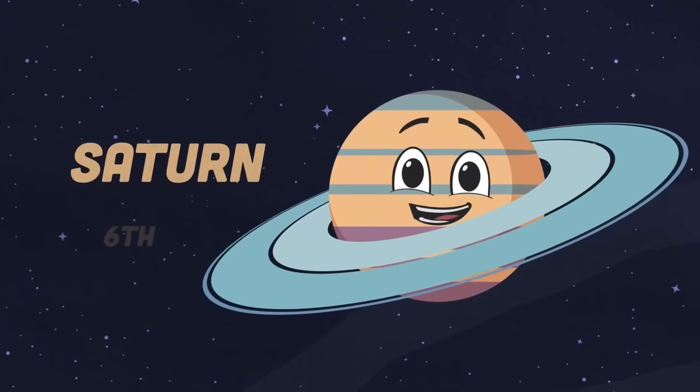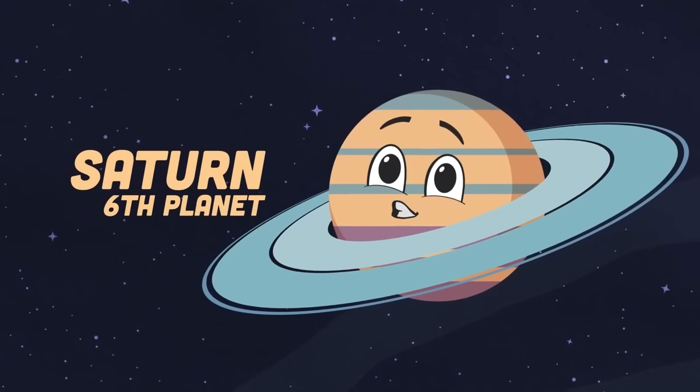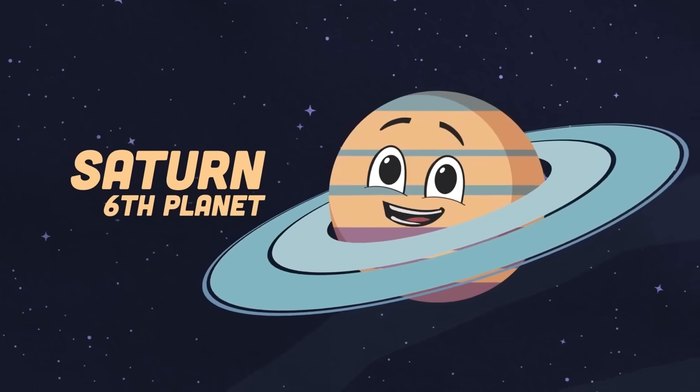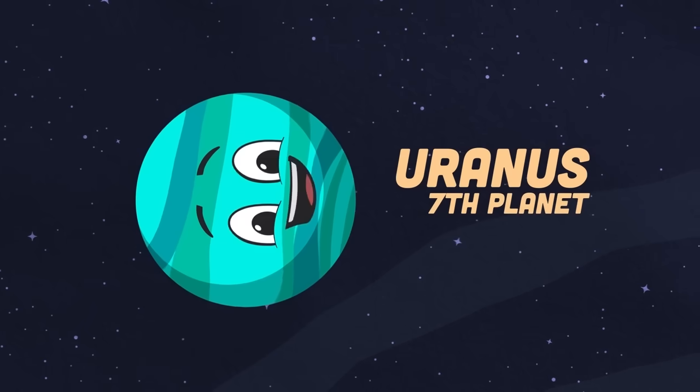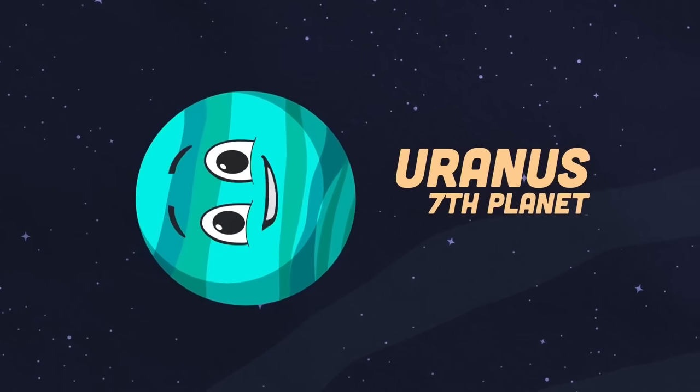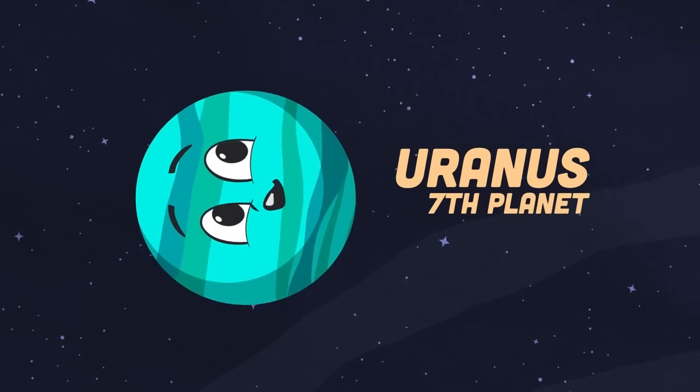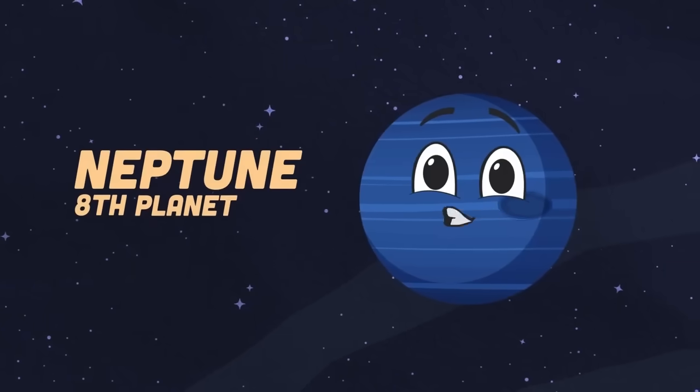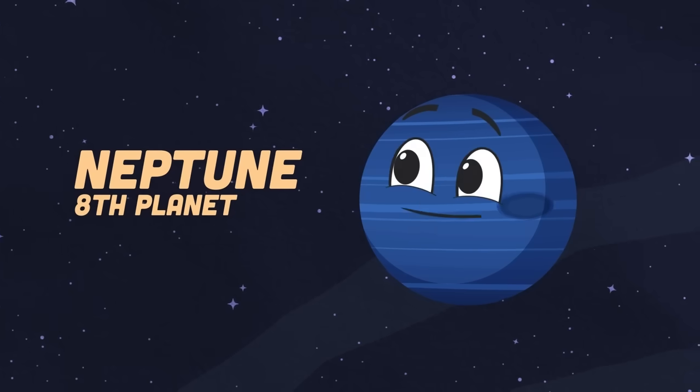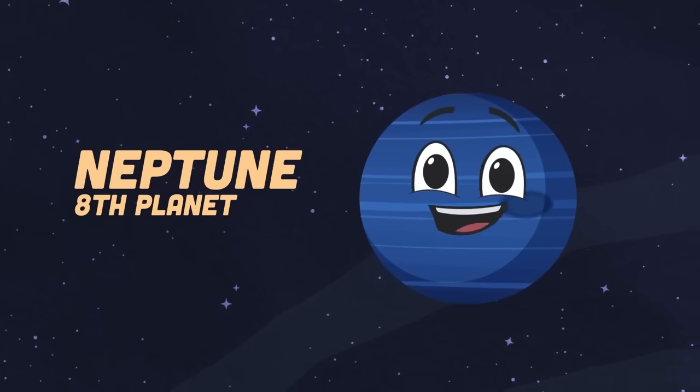My name is Saturn, the sixth planet you now see. My surface is mainly made of helium, so you can't stand on me. I'm Uranus, I'm the seventh planet from the sun, that's me. My axis almost tilts to an extreme 98 degrees.